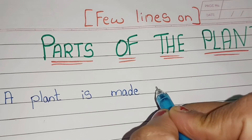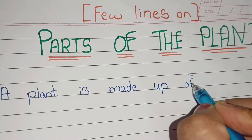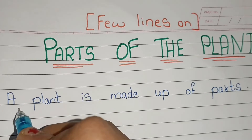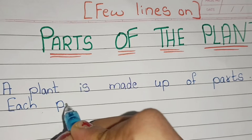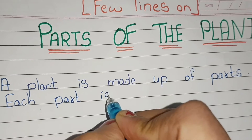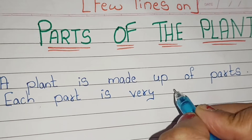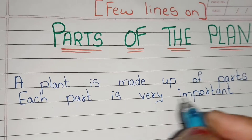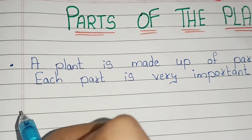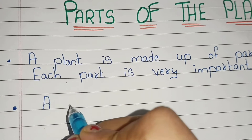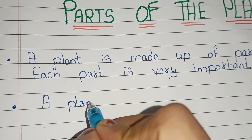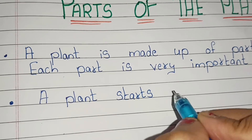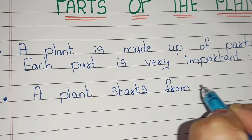A plant is made up of parts. Each part is very important. A plant starts from a small seed.